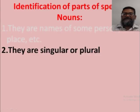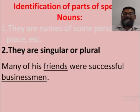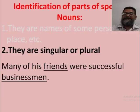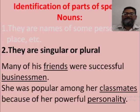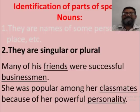Another way to identify nouns is that they can be singular or plural. For example: 'Many of his friends were successful businessmen.' Friends is the plural form of friend, and businessmen is the plural form of businessman — so both are nouns. Similarly, in 'She was popular among her classmates because of her powerful personality,' classmates is a plural noun and personality is the singular form of personalities — both are nouns.